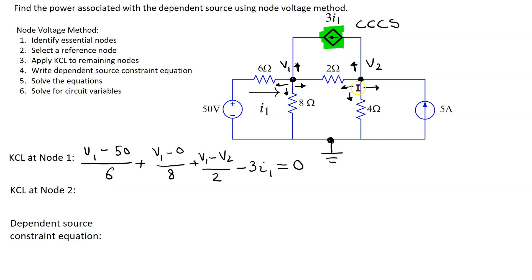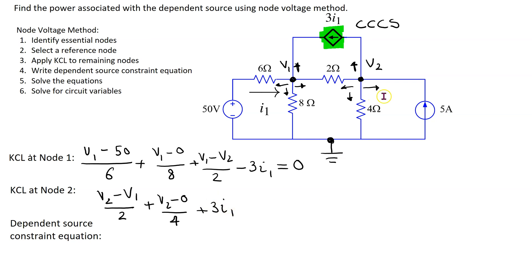We repeat the process at node 2. This branch current through the 2 ohm resistor: we treat the end where the current is entering as higher potential and this point as lower potential. This branch current is given by (V2 minus V1) over 2. Through the 4 ohm resistor, we get V2 minus 0 over 4. This branch current is in the same direction as the current source, so this branch current is given by plus 3I1. Then this last branch current — we have a current source in this branch, so its magnitude must equal the magnitude of the current source, and because of the different directions, we get minus 5 equal to 0.